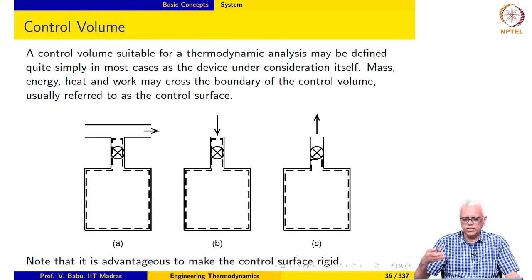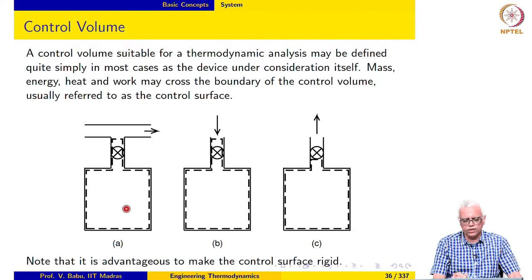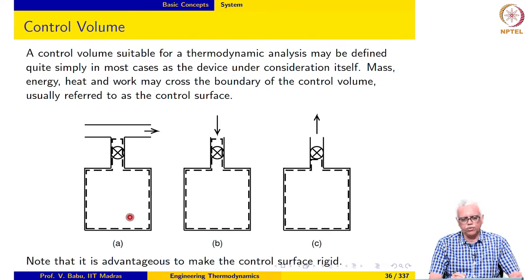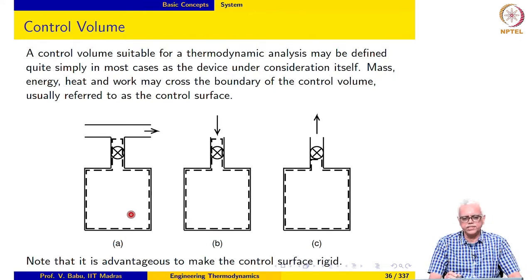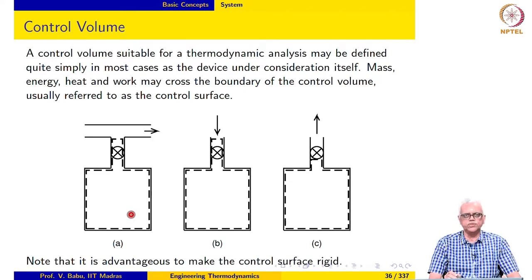The first example looks at filling of a tank from a line. We take the tank to be our control volume and the control surface is shown in dashed line here. Mass, energy, heat, and work may cross the boundary of a control volume, and the boundary of the control volume is usually referred to as the control surface.